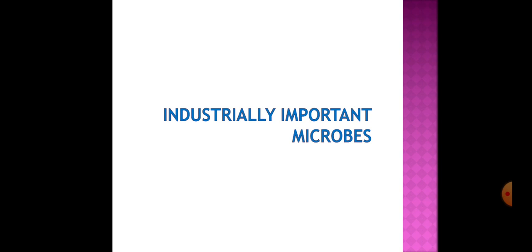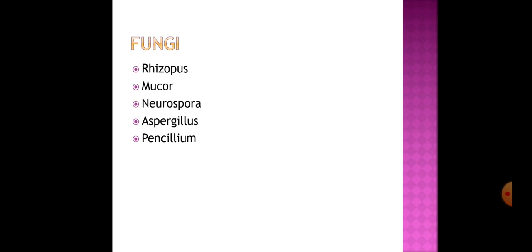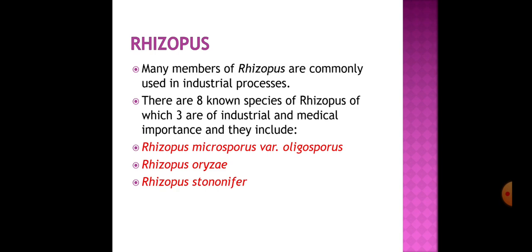Industrially important microorganisms include bacteria, fungi, yeast, and actinomycetes. Let us begin with fungi. The genera of fungi include Rhizopus, Mucor, Aspergillus, and Penicillium. Rhizopus is known to have eight species, out of which three are of industrial and medical importance.